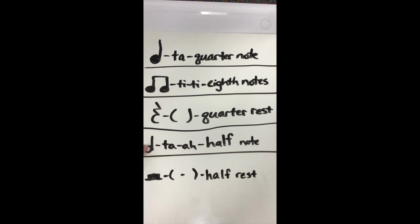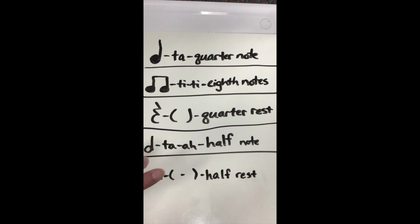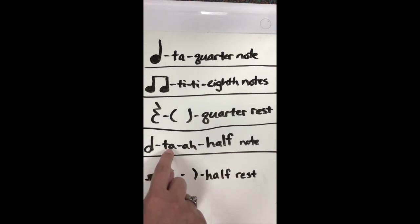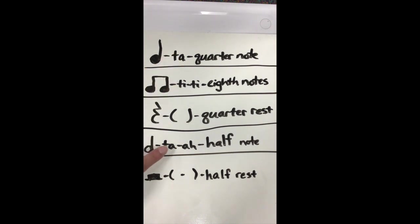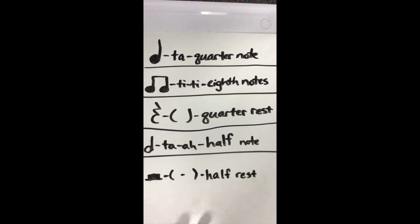Down here, it looks like our quarter note but this time it's not filled in — this is on purpose. This is our half note, and it gets two beats. So we would say 'ta' and hold it out. It starts off just like our quarter note 'ta,' but we hold out the 'ah' sound for two beats. So if we're tapping our beat, we would say 'ta-ah' while clicking two times.